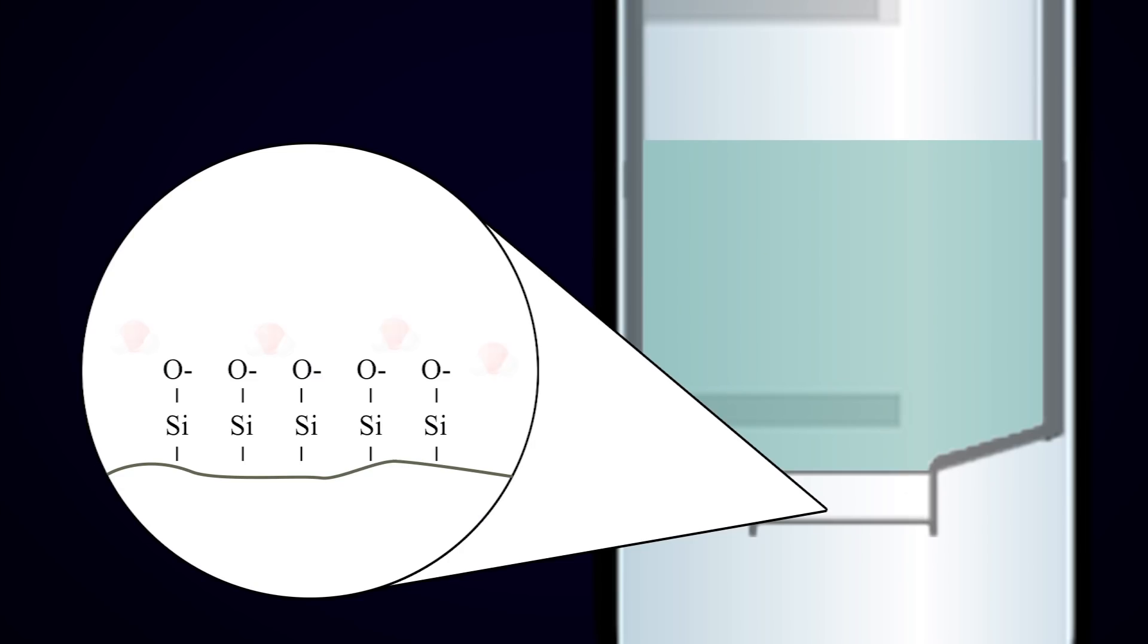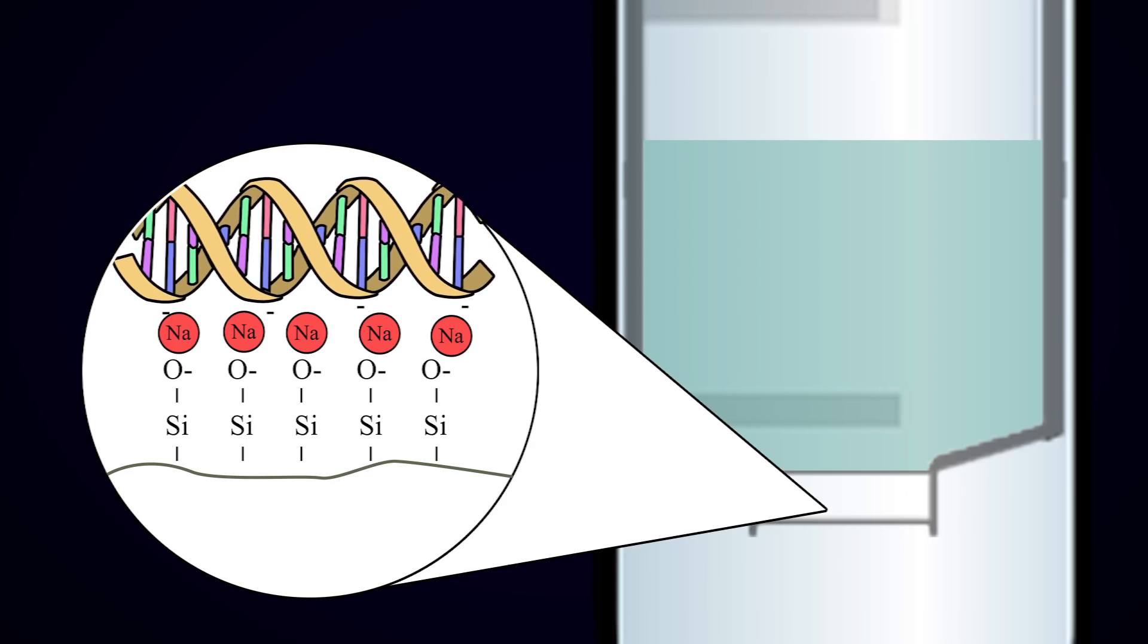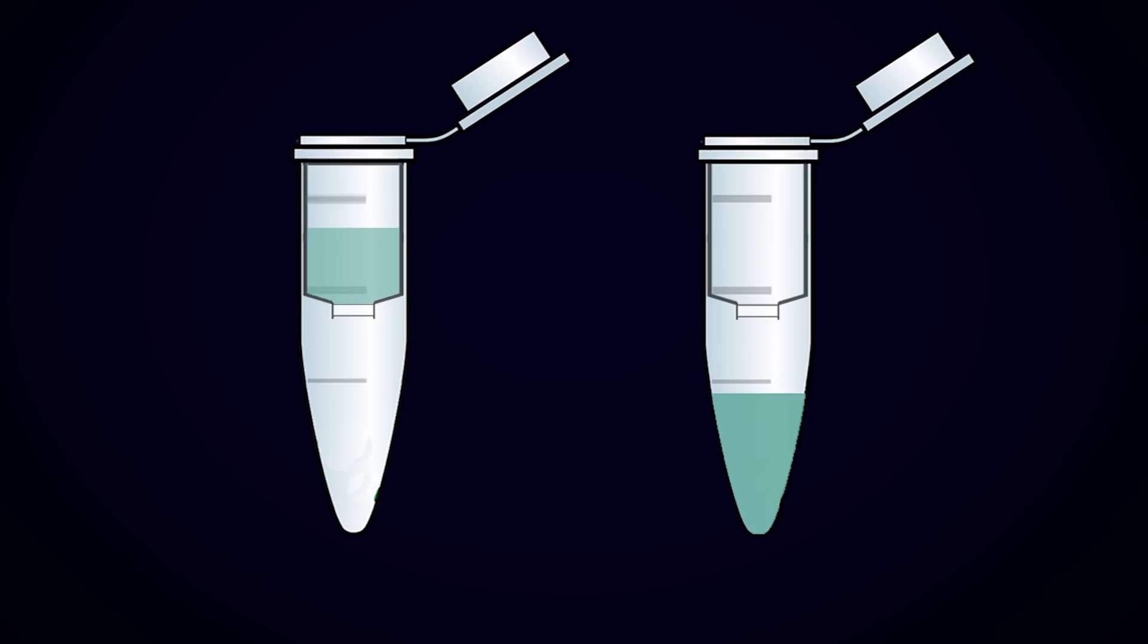DNA is negatively charged, and in the salty conditions of the solution, the silica or resin becomes positively charged, so the two stick together. When we spin down the column, the rest of the solution containing everything else just passes right through. We then do a series of washes to clean everything, and then we're ready to collect the DNA.